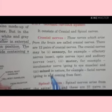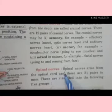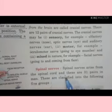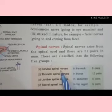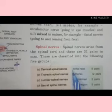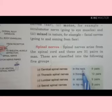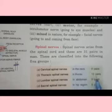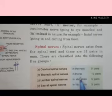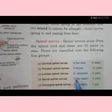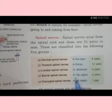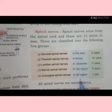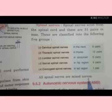Spinal nerves arise from the spinal cord and there are 31 pairs in humans. These are classified into five groups: 8 pairs are cervical spinal nerves which connect the neck, 12 pairs are thoracic spinal nerves which cover the thorax, 5 pairs are lumbar spinal nerves covering the abdomen, 5 pairs are sacral spinal nerves covering the hip region, and 1 pair is coccygeal spinal nerves covering the tail region.